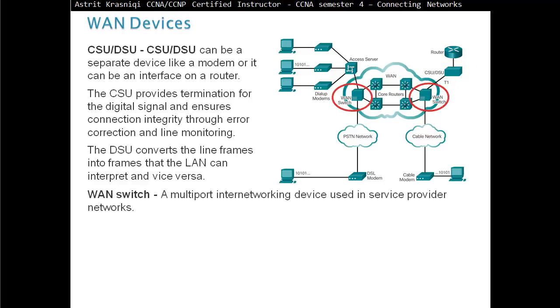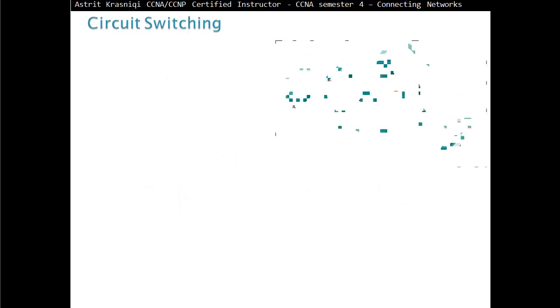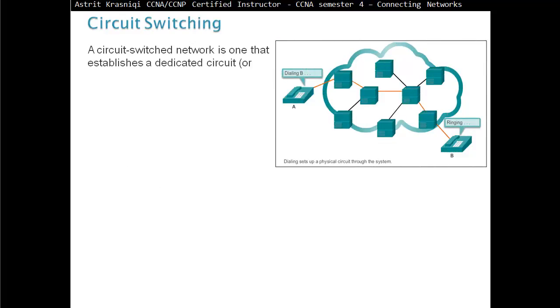Wide-area network switch, a multi-port inter-networking device used in service provider networks. Circuit switching. A circuit switched network is one that establishes a dedicated circuit or channel between nodes and terminals before the users may communicate. It's like your phone calls. When you dial someone, then you're building a circuit.